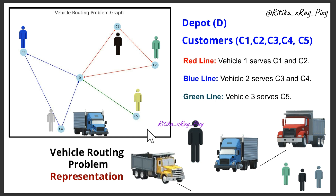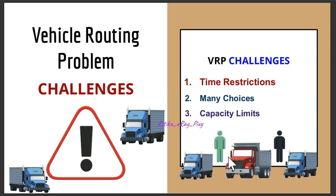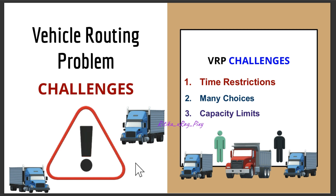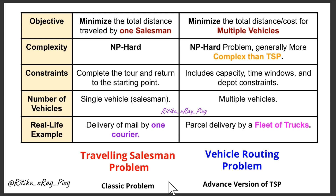The goal is to minimize the cost while satisfying customer demand and ensuring each customer is served. There are different challenges: sometimes customers need delivery at a specific time; when there are many customers and many trucks, finding the best solution for all is complicated because we need to satisfy both the customer and the company; and each truck has a limited capacity. These challenges must be kept in mind while solving VRP, and advanced methods are needed to find good solutions.